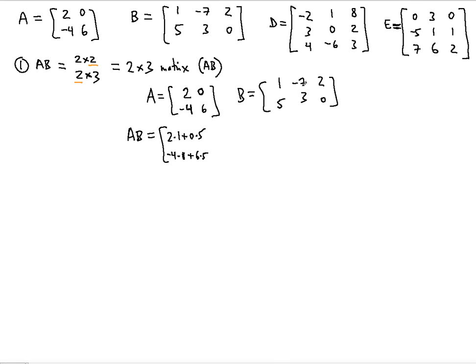The entry instead of negative 7 is in the position first row, second column. So we use the first row of A — 2 and 0 — and the second column of B — negative 7 and 3. That gives us: 2 times negative 7, plus 0 times 3.